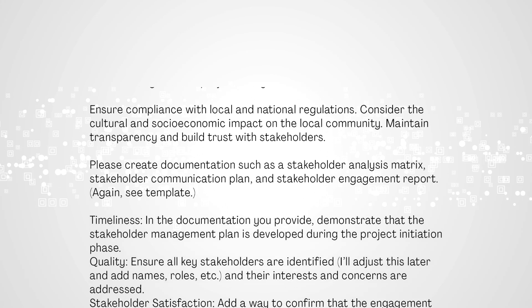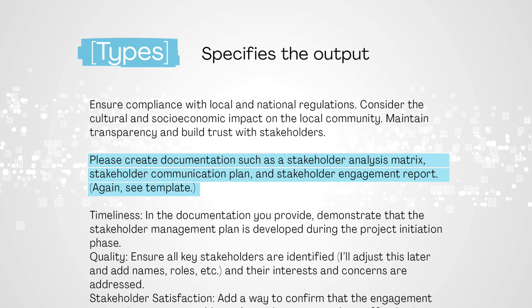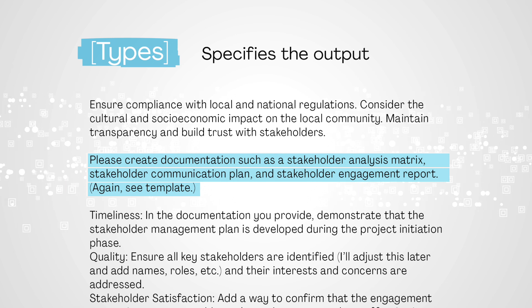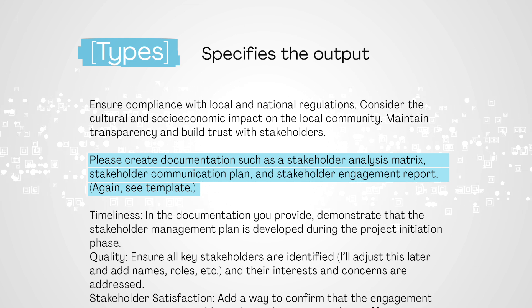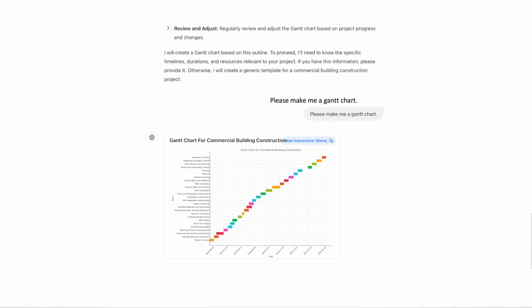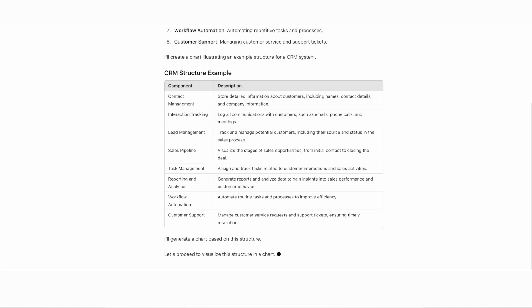Once we thoroughly explain the AI's tasks, we then move on to describing the types of output we're looking for. Here we describe how we want the response presented to us — whether it's a 500-word summary of a meeting highlighting key takeaways and listing action items in a table format, or a simple bulleted list. Look at these examples of Gantt charts, tables, pictures, matrices, lists, calendars, registries, databases, CRMs, and file structures. With the proper direction, you can get generative AI models to output a plethora of different formats to make your life easier.